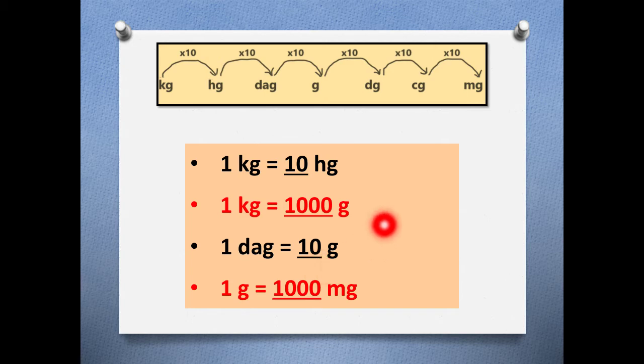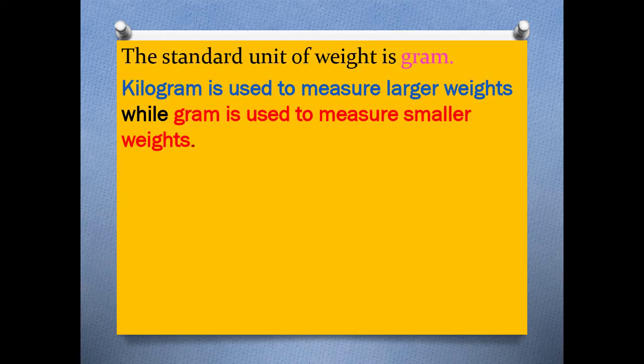And the last one, if we have to go from grams to milligrams we jump one, two, three times. So one gram has 1000 milligrams in it. Now the standard unit of weight is gram.